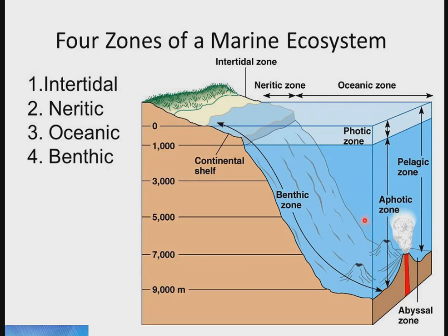Organic matter from higher up in the water column serves as the only source of energy in these deep zones. Examples of animals here include big fish like shark, ray, croaker, sea catfish, crocodile, worms, bacteria, and sea urchins.